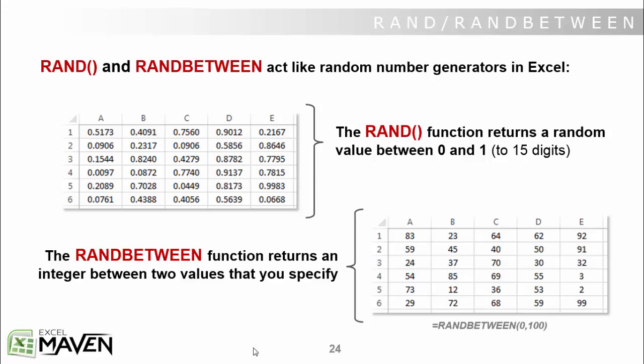The first is the RAND function, and when you write it, you literally just open and close the parentheses without anything in between, just like you see here. There are a few functions in Excel, like today and now, which we'll cover in the date and time section, where you write it this way. There's actually no components to the formula besides the formula name itself. And what the RAND function does is it returns a random number between 0 and 1 out to, I believe, 15 digits.